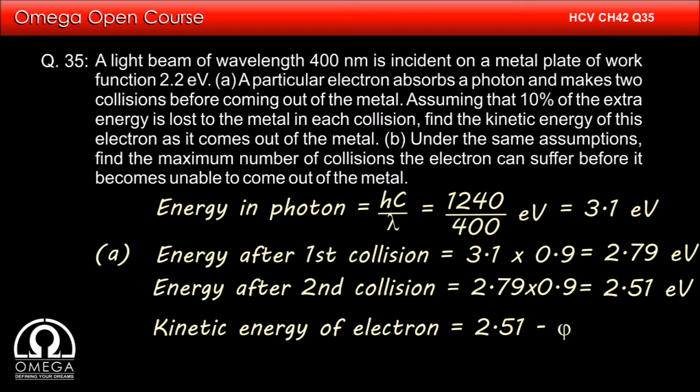Now the electron will come out losing energy equal to the work function, and the remaining energy of the electron will be its final kinetic energy. So the final kinetic energy of the electron is 2.51 minus 2.2, that is 0.31 eV. This is our answer.